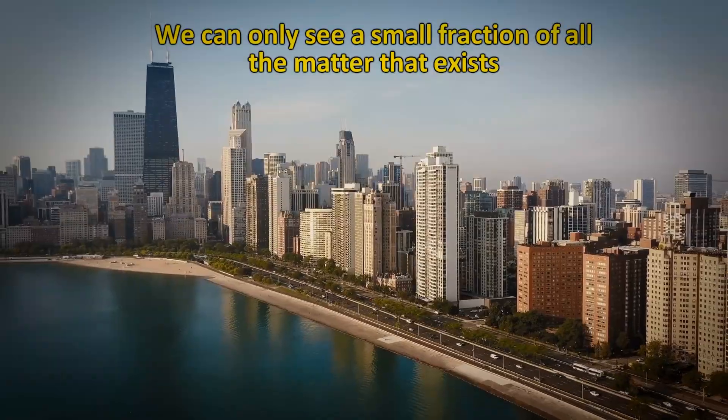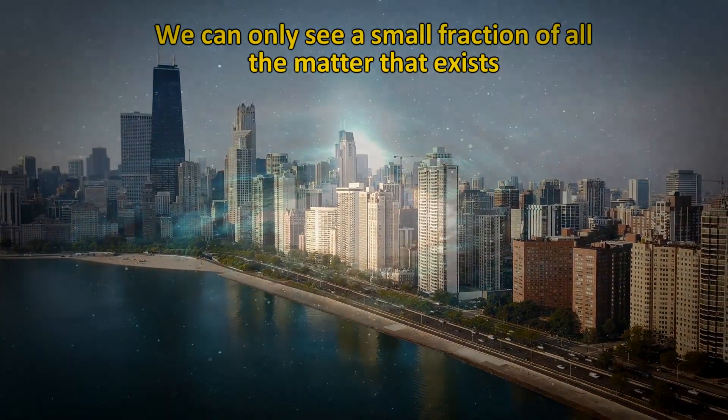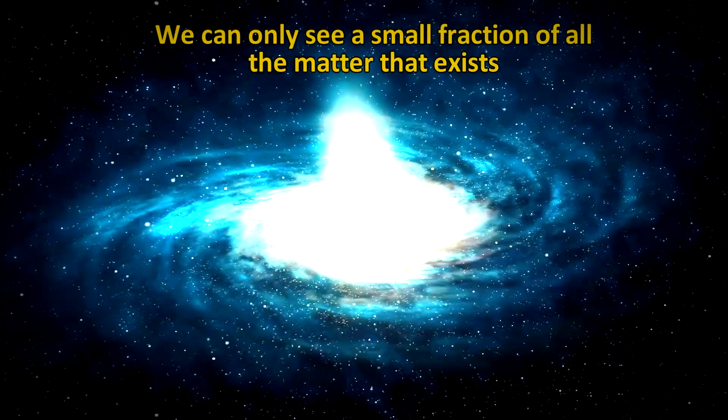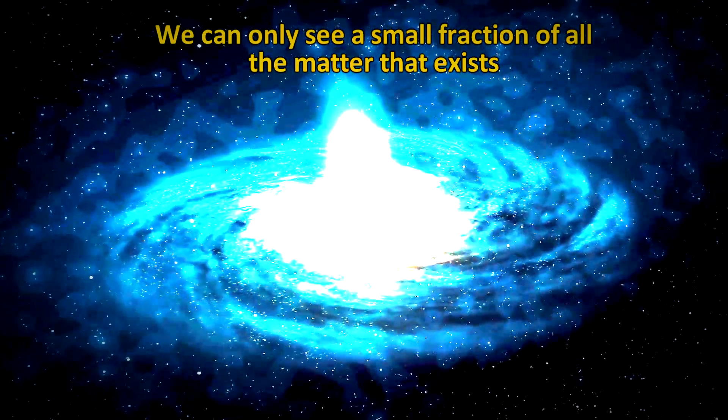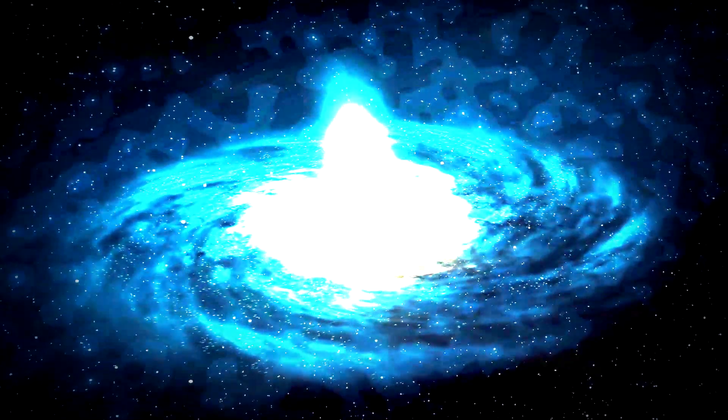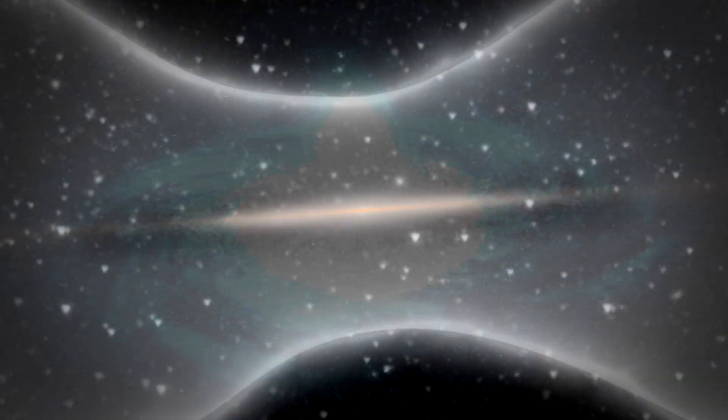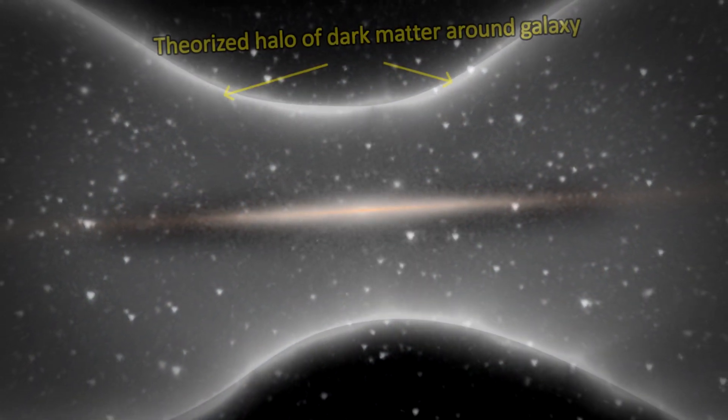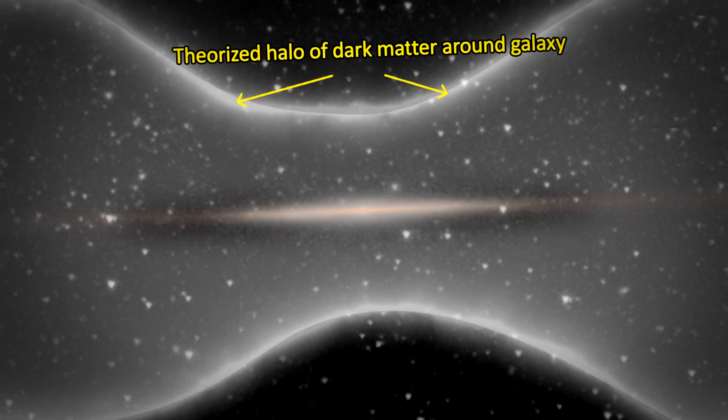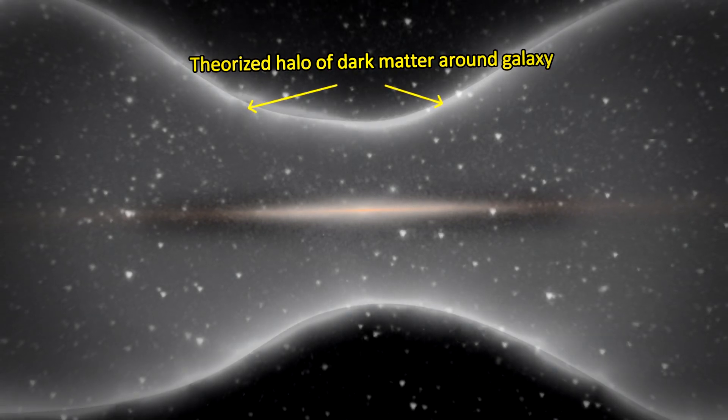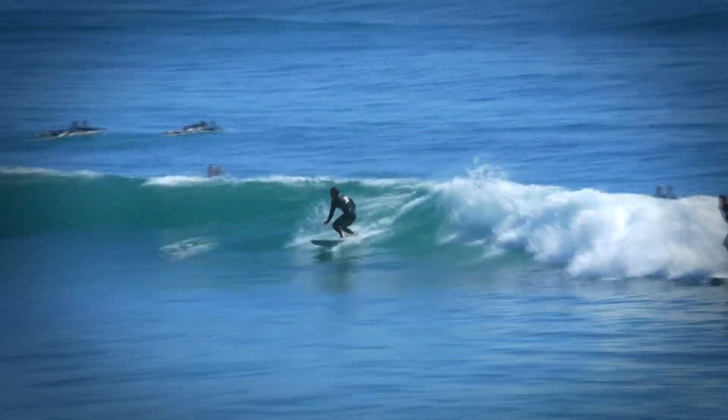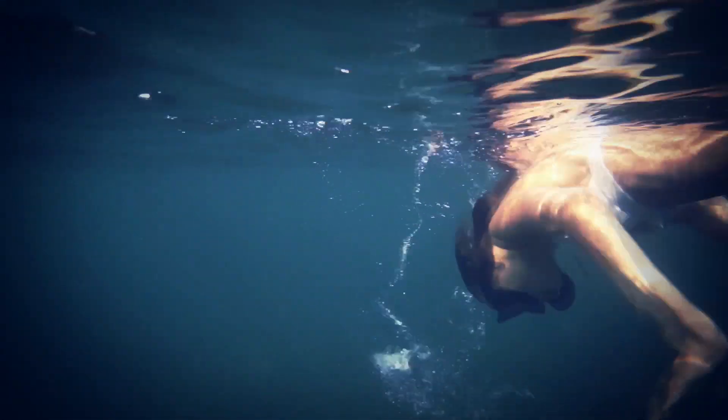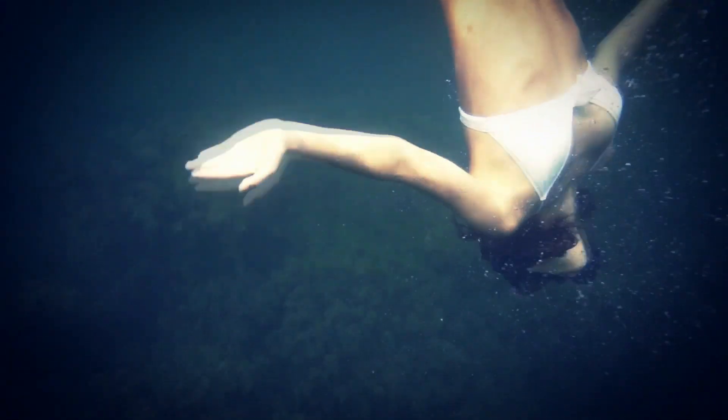It turns out that visible matter, that's everything that you can see on Earth and in space with the most powerful telescopes, is only a minuscule portion of all that exists. There's about six times more matter in the universe than what we can see. This invisible matter is called dark matter. This means that what we're seeing are only the waves on top of the ocean. We're not really seeing the ocean itself. Yet without this ocean, we would likely not exist.